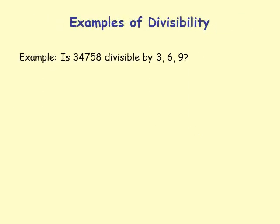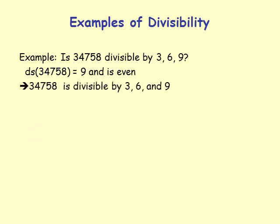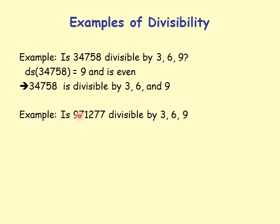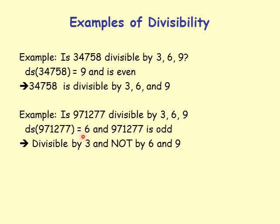Examples: Is 34758 divisible by 3, 6, and 9? Its digit sum is 3+4+7+5+8 = 27, which reduces to 9, and the number is even. So it is divisible by 3, 6, and 9. Another example: Is 971277 divisible by 3, 6, and 9? Its digit sum is 6 and the number is odd. So it is divisible by 3 only, not by 6 or 9.